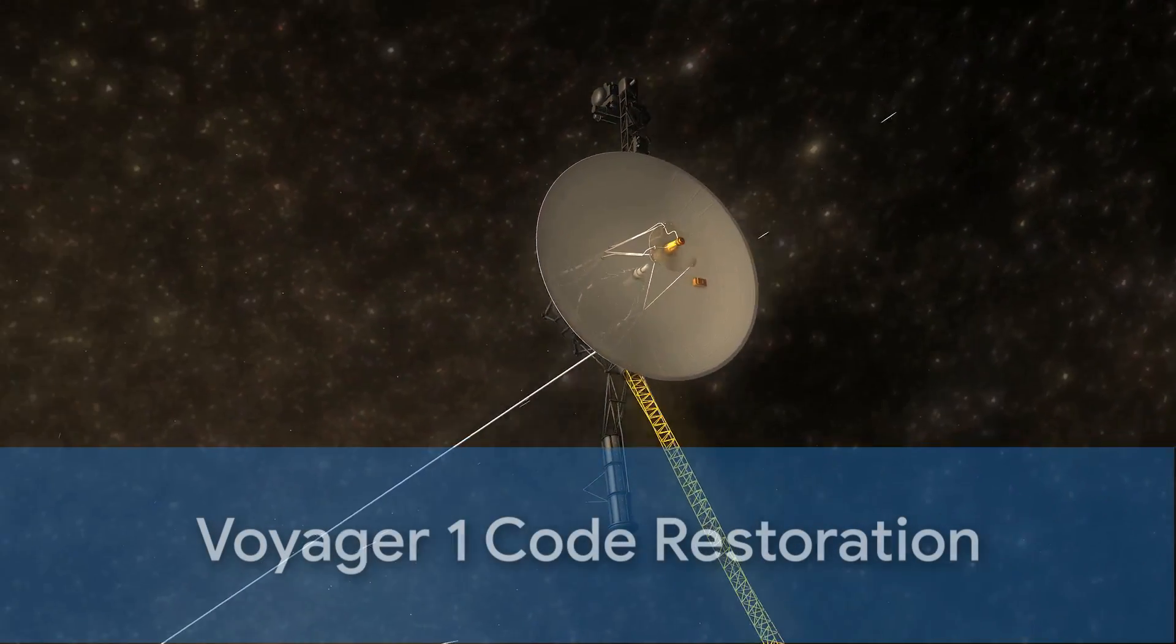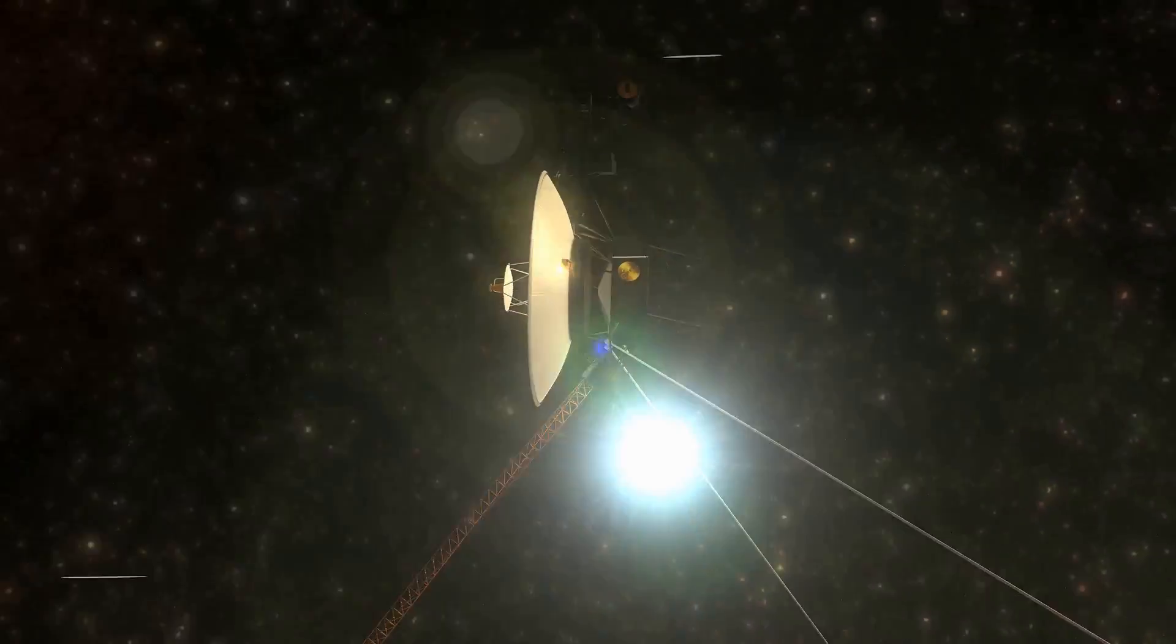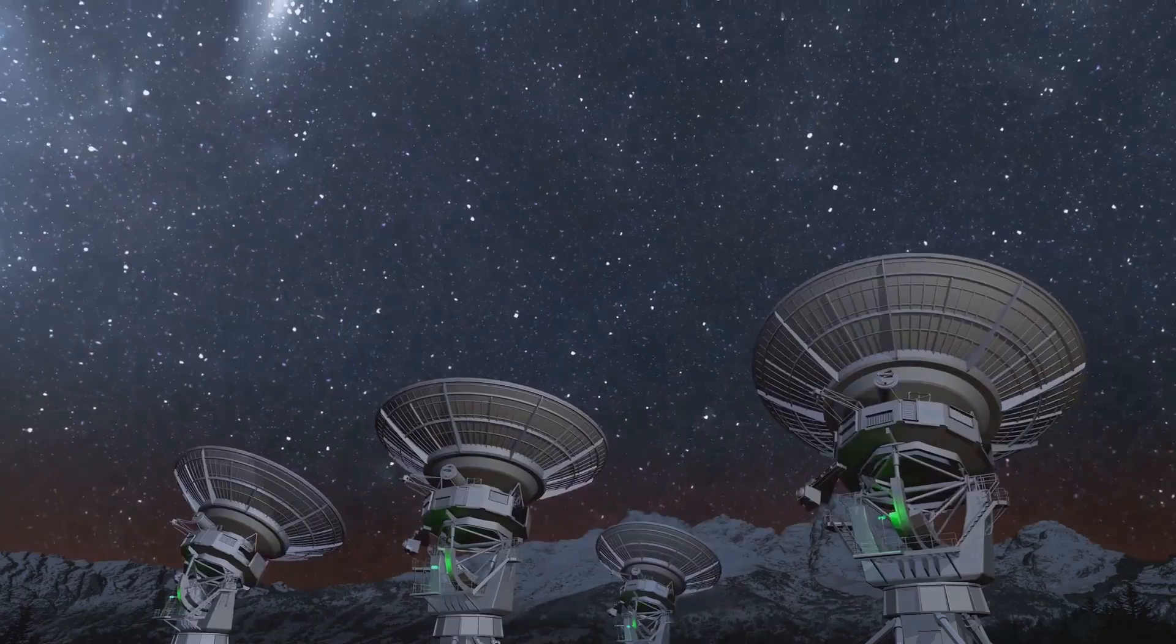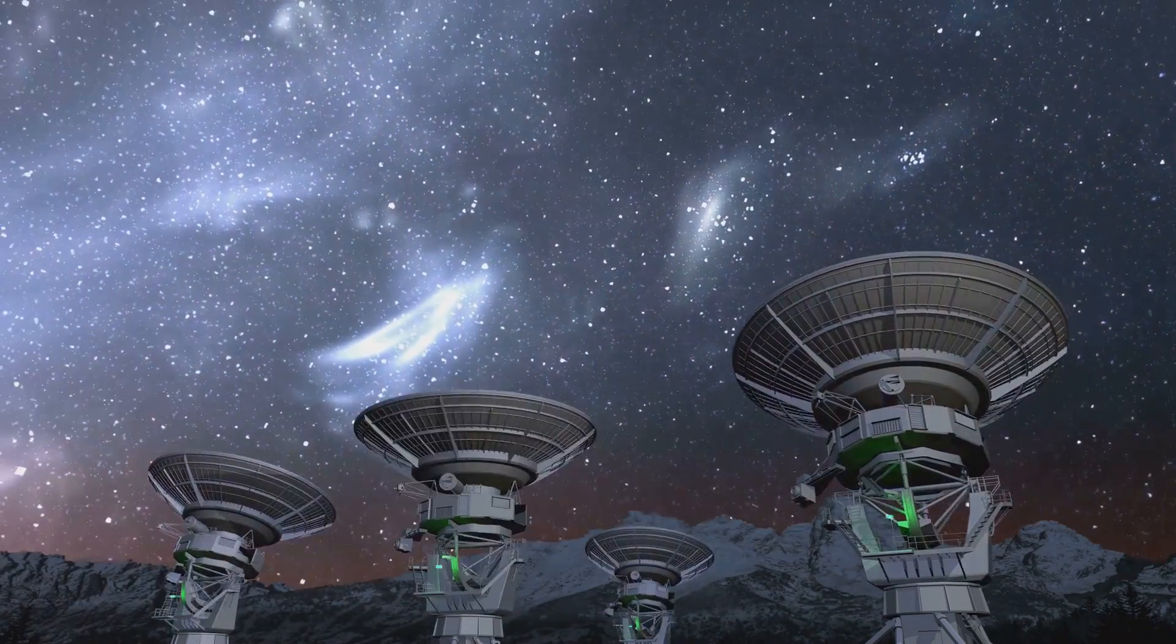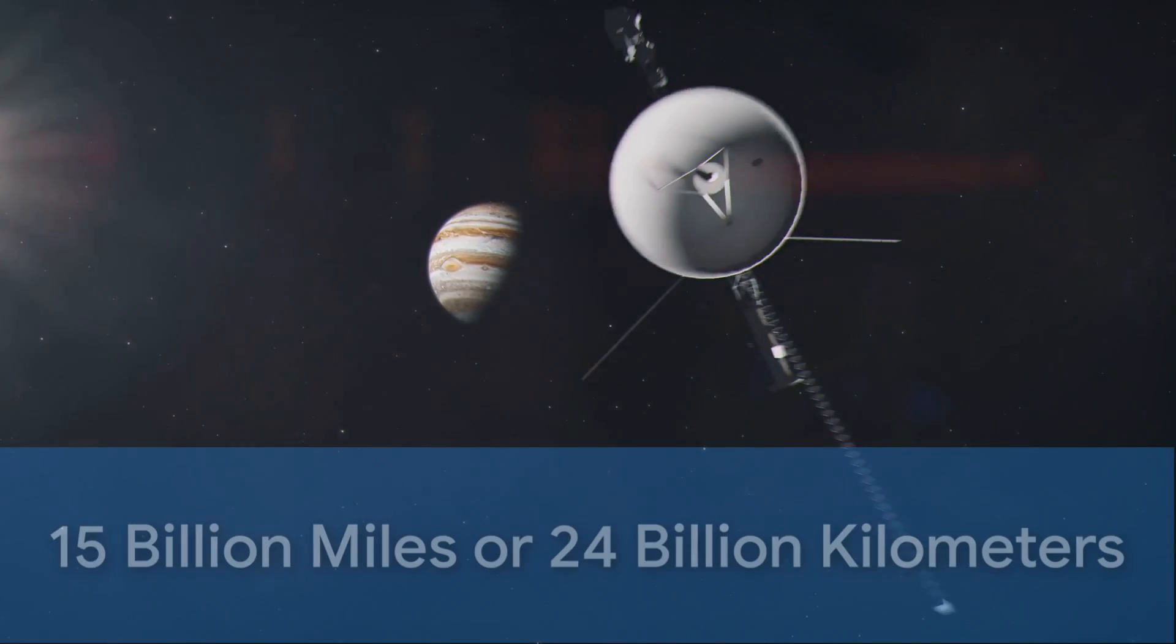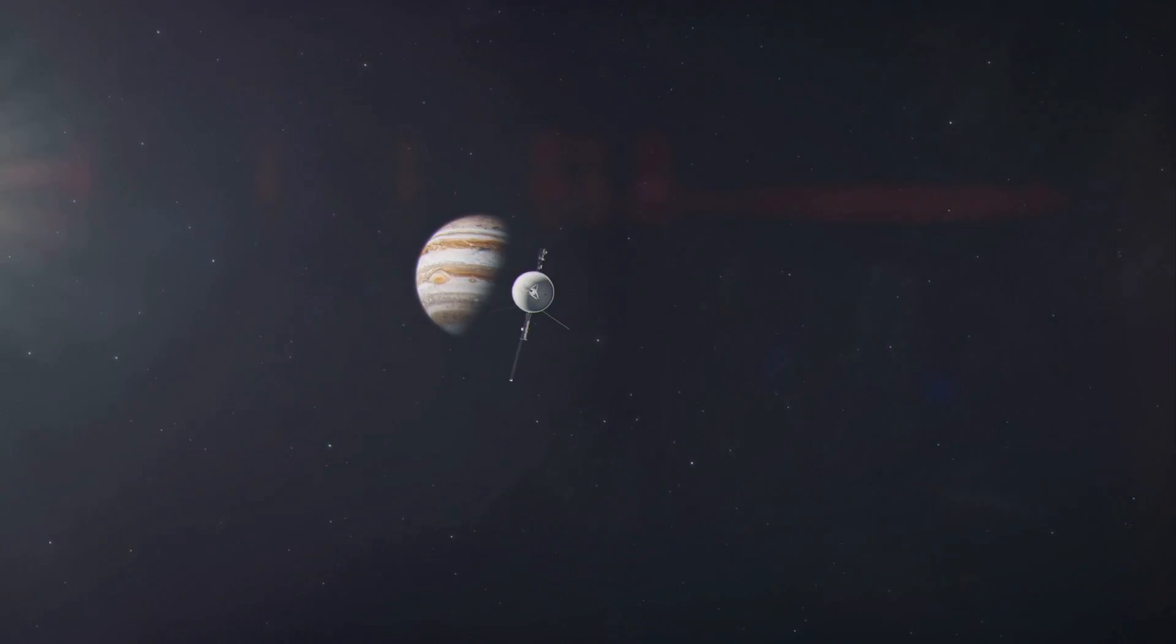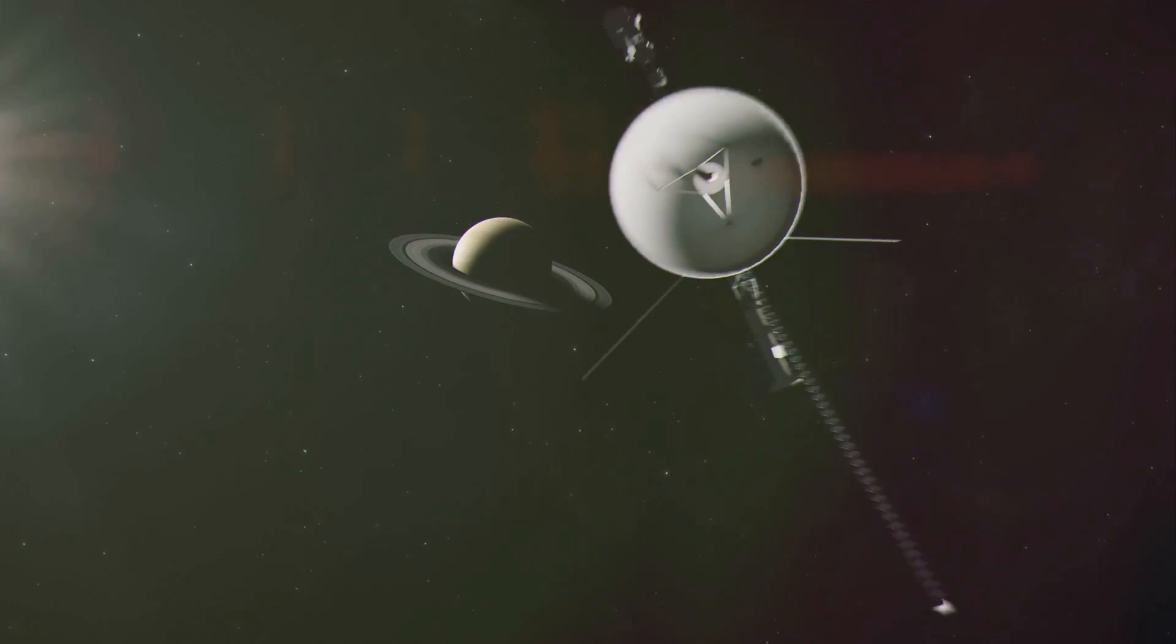Initiating this operation, the team prioritized the code responsible for packaging the spacecraft's engineering data. On April 18th, a meticulously crafted radio signal transmitted the modified code segments to their designated locations within Voyager 1's memory. Given the immense distance of over 15 billion miles or 24 billion kilometers between Earth and Voyager 1, the round-trip communication time for signals was approximately 22 and a half hours.